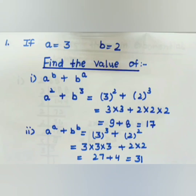So 3 to the power 2 means 3 into 3, plus 2 to the power 3 means 2 into 2 into 2 — we write 2 three times. Multiplying: 3 into 3 is 9, plus 2 into 2 is 4, and 4 into 2 is 8. So 9 plus 8 equals 17.